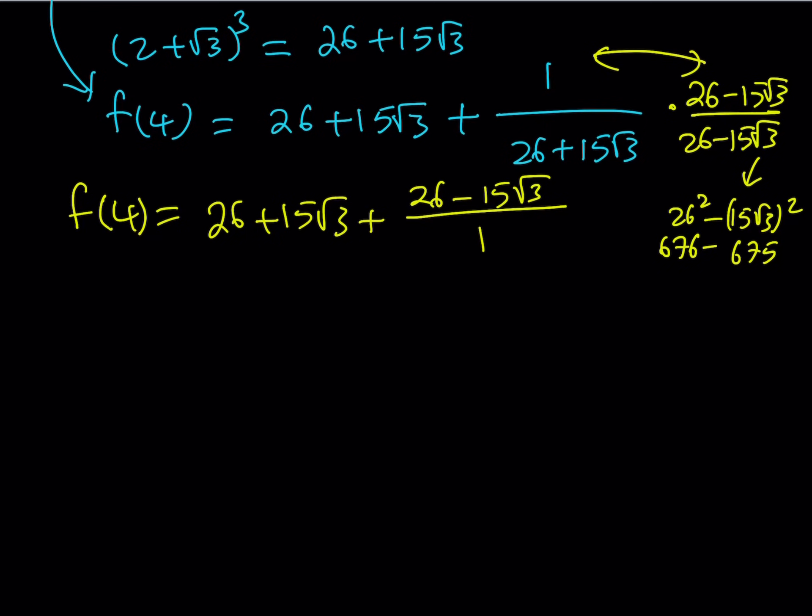Awesome. Everything is awesome. So we can just go ahead and simplify this because dividing by 1 is going to give me the same thing. 15 root 3 and negative 15 root 3 are going to cancel out. And this is going to leave us with f of 4 equals 26 plus 26, which is equal to 52.